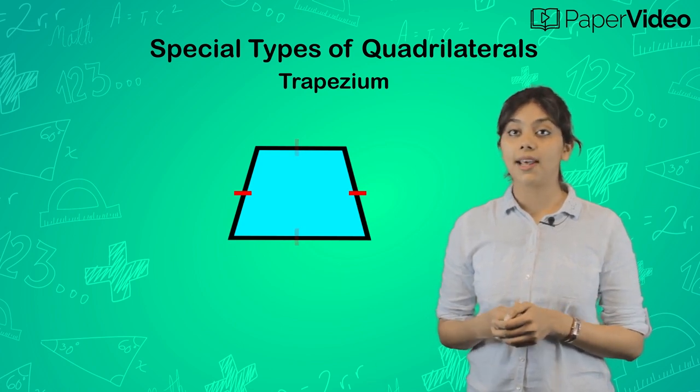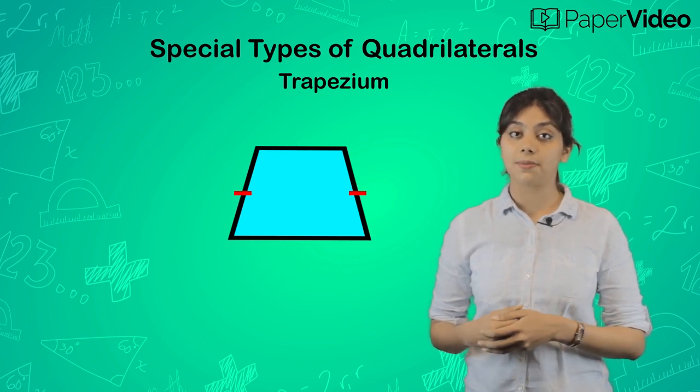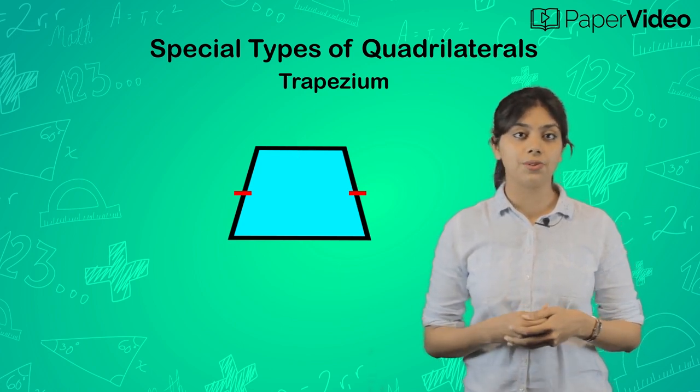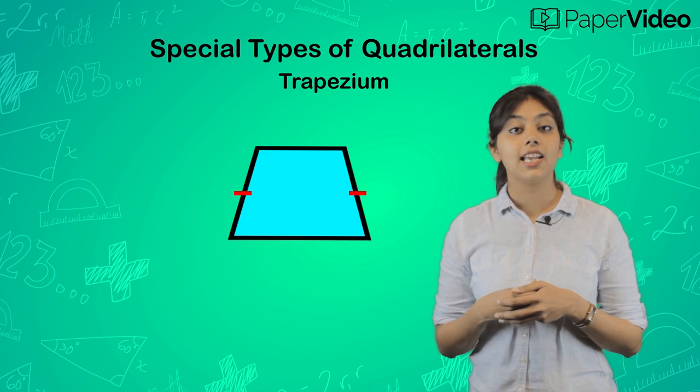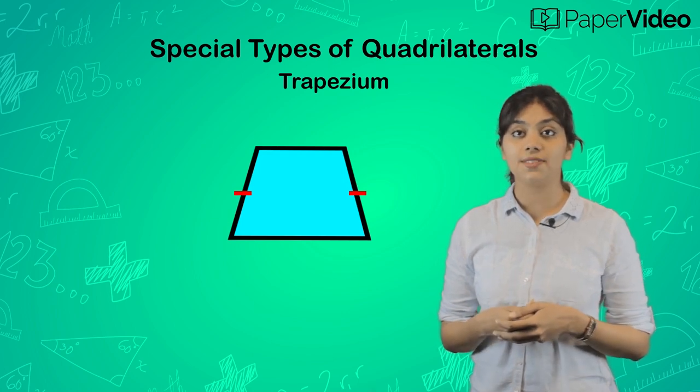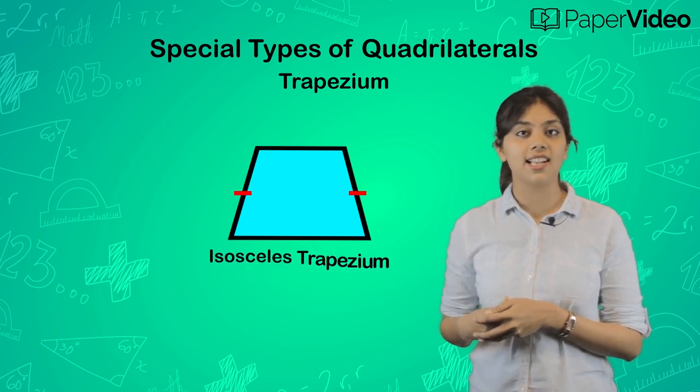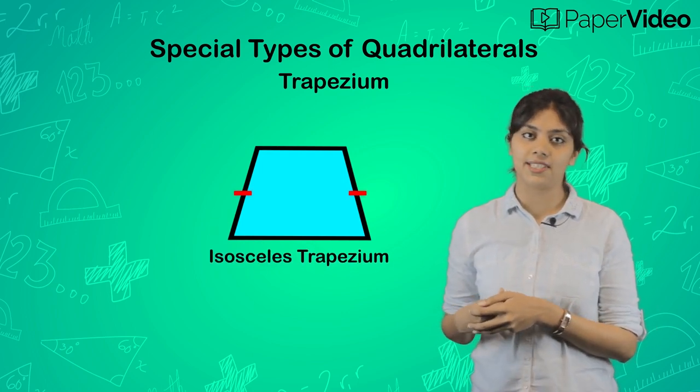What if the non-parallel sides of a trapezium are congruent? In such a case, we call it an isosceles trapezium.